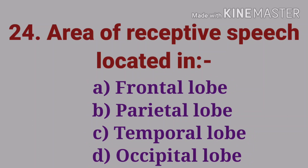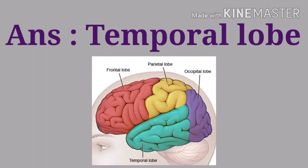Next question: area of receptive speech is located in — options are frontal lobe, parietal lobe, or temporal lobe/occipital lobe. The answer is temporal lobe, that is Wernicke's area. The area of expressive speech is Broca's area, located in the frontal lobe. Receptive speech is in the temporal lobe and expressive speech is in Broca's area.